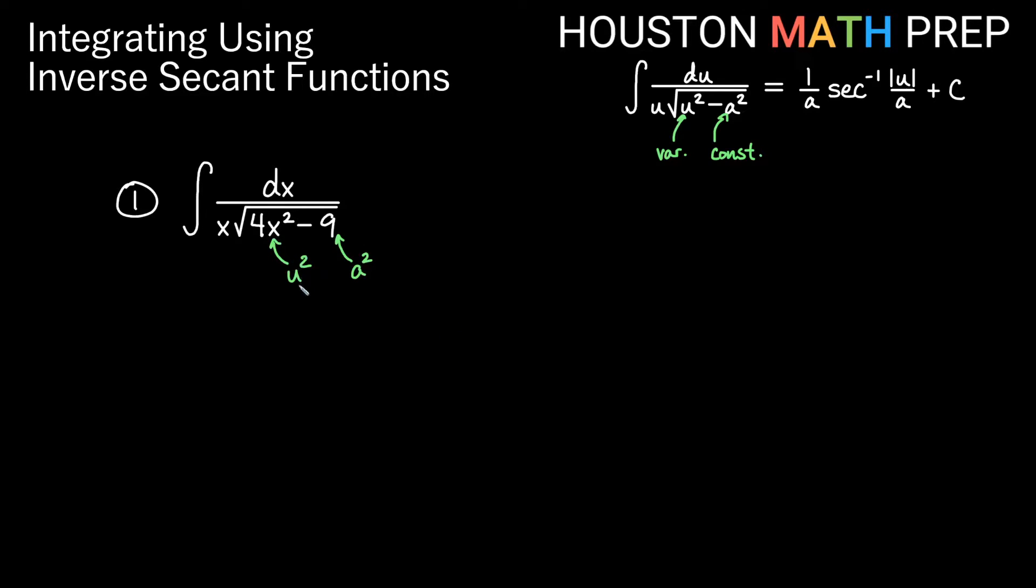So if I'm choosing u squared to be 4x squared and a squared to be 9, let's write down the information we have so far. So we have a would then be 3 if a squared is 9. And what would u be? Well, I need u squared to equal 4x squared, so 2x times itself actually gives us 4x squared. So u is 2x in this case.